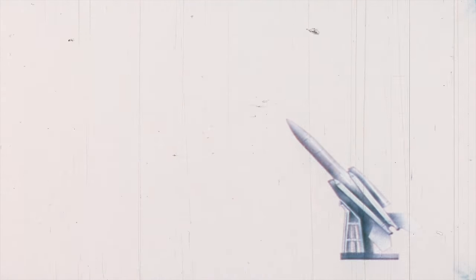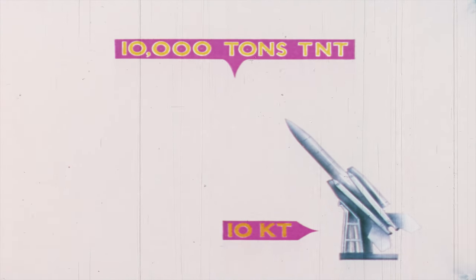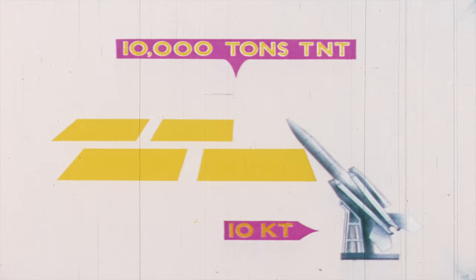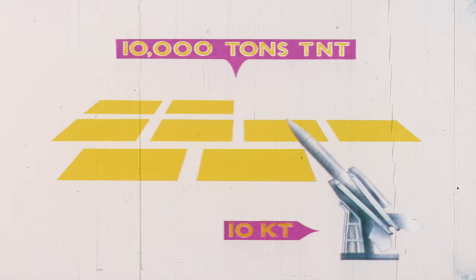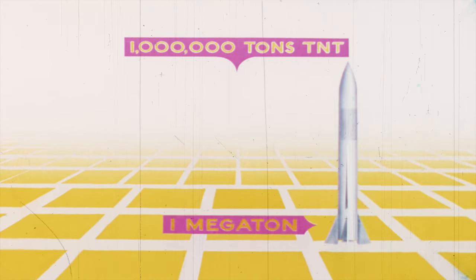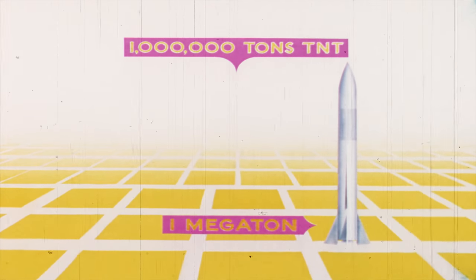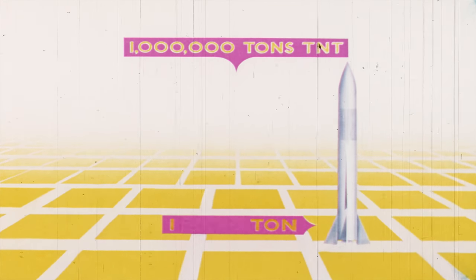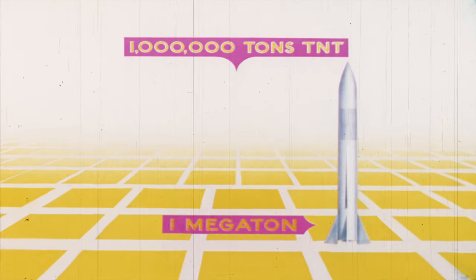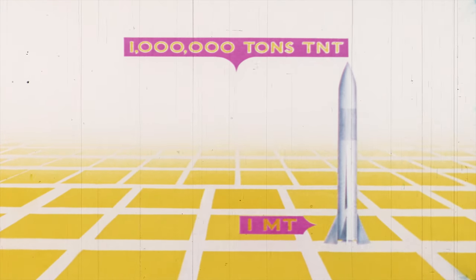Similarly, a 10 kiloton weapon is equivalent to 10,000 tons of TNT, enough to cover 10 football pitches. And so on, up to a million tons of TNT, where the nuclear prefix changes to mega, as in a one megaton weapon, abbreviated to 1MT.